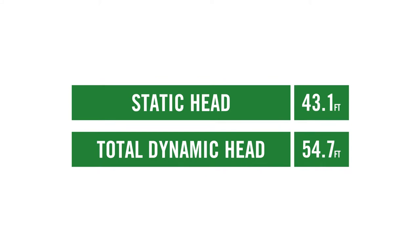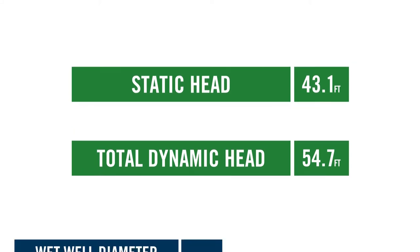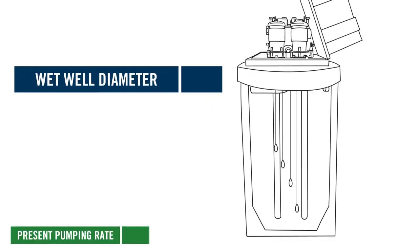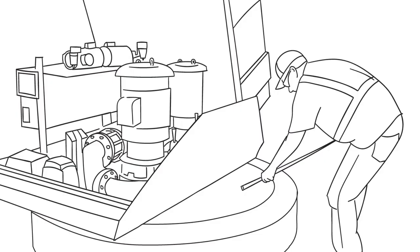Now that you've determined total dynamic head and static head, you need to determine present pumping rate. To do this, you will need to measure and record the diameter of your wet well.